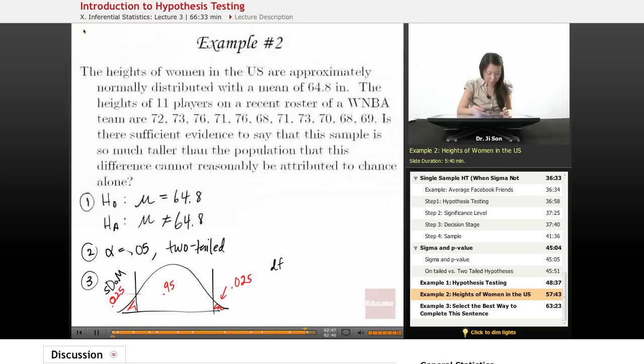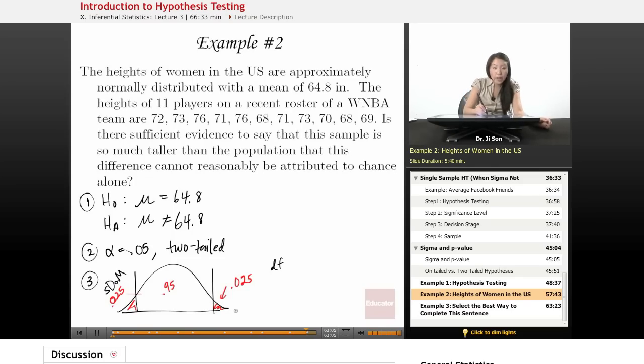And so if I go back to my problem, is there sufficient evidence to say that this sample is so much taller than the population that this difference cannot be reasonably attributed to chance alone? I should say yes, because when you're way out here, your probability that you belong to this chance distribution is so small that it's reasonable for us to say it probably came from a different population, that the sample came from a different population.